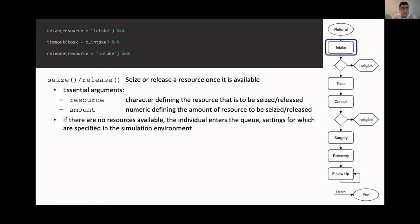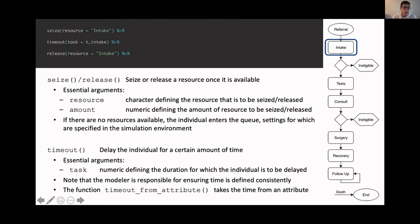And the settings for the queue can be performed in the simulation environment. The other thing we do here is we delay the individual using the timeout function. After seizing the resource, we delay the individual for a certain amount of time. In this case, the amount of time is defined by the parameter that's defined in R, T underscore intake. You can perform such a timeout by specifying the task, which is the duration of time. It's important to realize that it's the model's responsibility to ensure that time is consistently defined throughout. Simmer doesn't simulate in months or years or whatever. It simulates in time units. It's your responsibility to ensure that that's consistently implemented. And if what you will often do, probably, is first save the time into an attribute, you can directly delay the patient from an attribute using the timeout from attribute function.